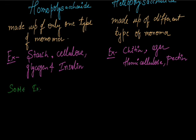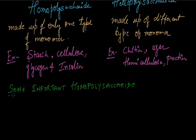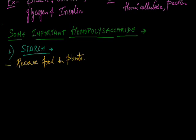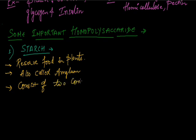First is the most common starch. Starch is primarily a reserve food in plants. It is also called amylum and is made up of glucose. It consists of two components: amylose and amylopectin.